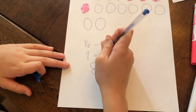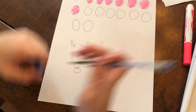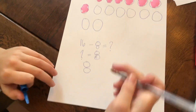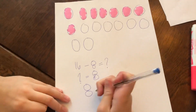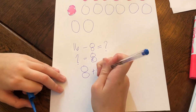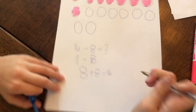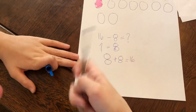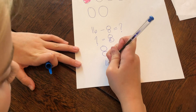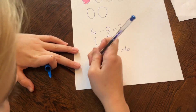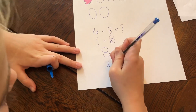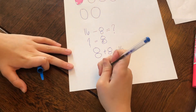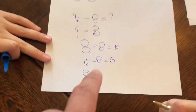Another thing I know is that 8 is half of 16. So I could also do... is that a doubles fact? Yeah. So you could also do 8 plus 8, which equals 16. Show me the double switcheroo. So the double switcheroo would be 16 minus 8 equals 8.